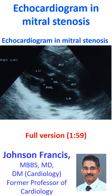Parasternal long axis view showing dilated left atrium, thickened and paradoxically moving — i.e., anteriorly in diastole — posterior mitral leaflet and doming anterior mitral leaflet. The movement abnormalities of the mitral leaflets are due to commissural fusion.